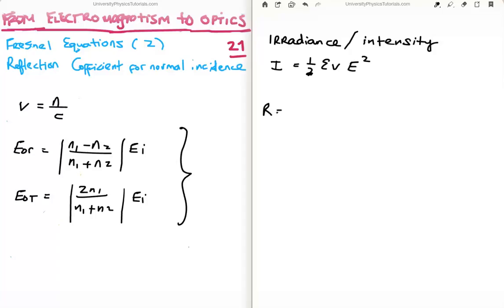Let's take the reflection coefficient. Define the reflection coefficient as the reflected irradiance divided by the incident irradiance. Because the speed and the permeability are the same - it's being reflected and incident on the same side of the medium - they all cancel, and so does the half. So all we are left with is the ratio of the squares of the electric field.